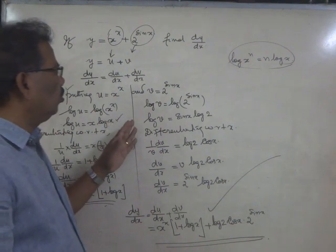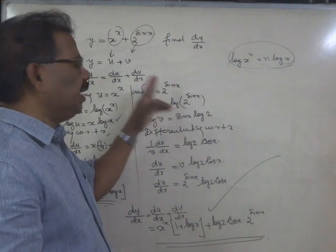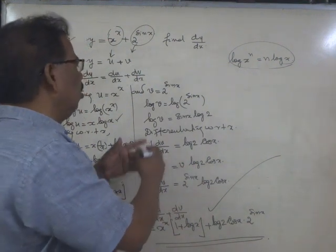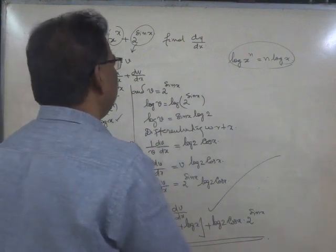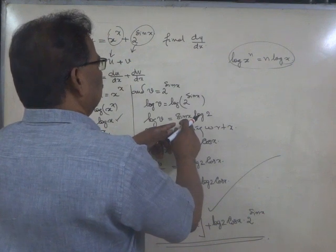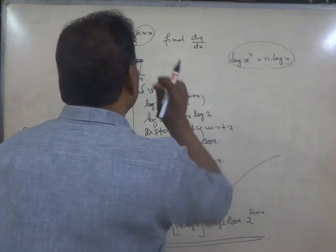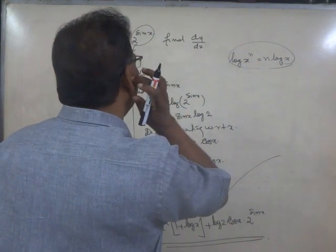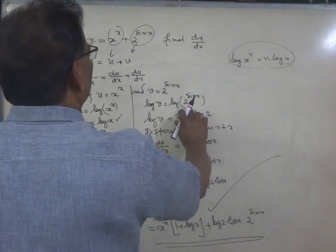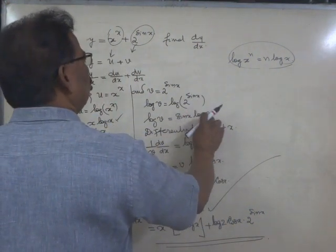Coming to the second function v: v is equal to 2 raise to sin x. We shall take logarithms on both sides. Log v is equal to logarithm of 2 raise to sin x, which equals sin x times log 2, since logarithm of x raise to n is n log x.